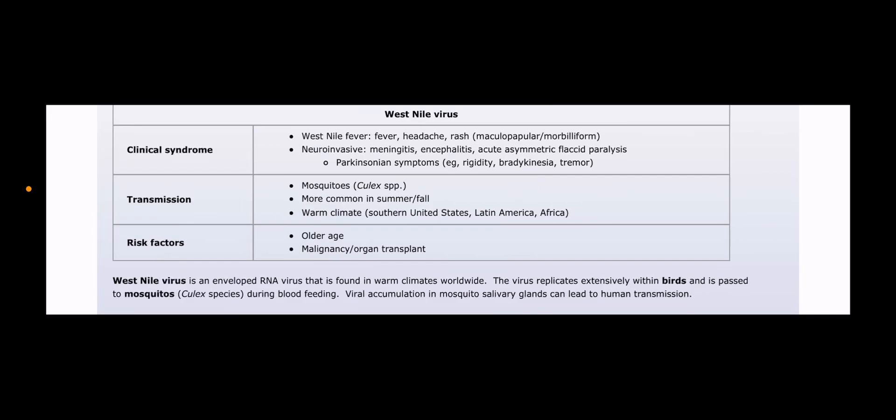It also presents with Parkinsonian symptoms — for example, rigidity, bradykinesia, and tremor. The mode of transmission is by mosquitoes, specifically Culex species, most commonly in summer and fall.